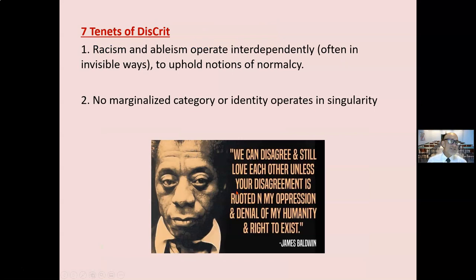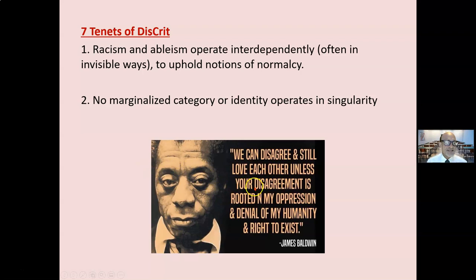Seven tenets of DisCrit — disability critical race theory. Racism and ableism operate interdependently, often in invisible ways, to uphold notions of normalcy: this is normal, you're not it, therefore you're deviant, you're abnormal. No marginalized category or identity operates in singularity. These marginalized populations — the special ed population — include people of color intersecting with people of various sexual orientations, women, and all these things. These marginalized categories operate interdependently.